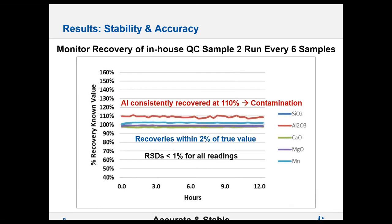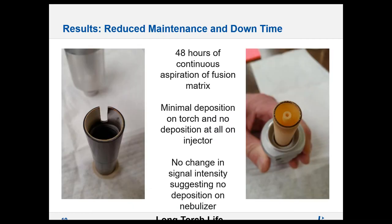The customer analyzes two in-house QC samples with each batch to determine bias and precision, analyzed approximately every 18 minutes. For the first QC sample, all recoveries were within 2% of the known values and RSDs of the three replicates were less than 1%. For the second QC sample, with the exception of aluminum (which the customer believed was contaminated), all recoveries were also within 2% of known values and RSDs were less than 1%. Despite the contamination, recoveries did not deviate by more than 2% from the average of 110%.